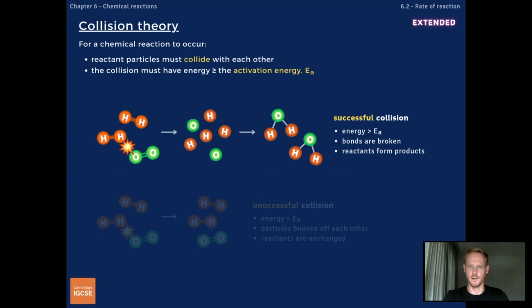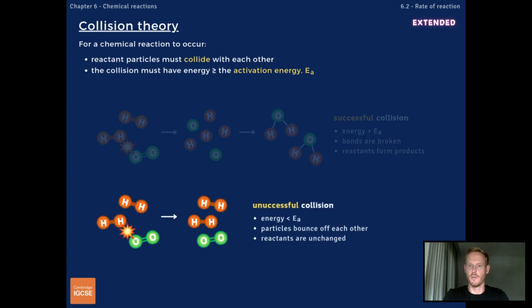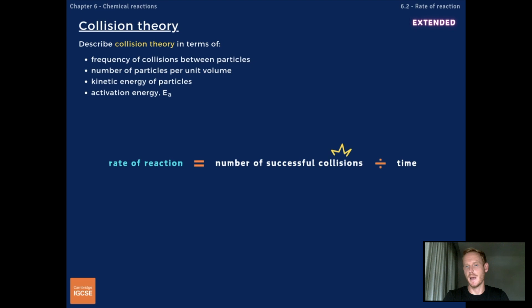Now there are two types of collisions. Successful collisions result in the formation of products, and unsuccessful collisions do not. If colliding particles have energy that is equal to or greater than the activation energy, then the collision is successful. If the energy of the particles is less than the activation energy, then the collision is unsuccessful and the particles remain unchanged. The rate of a chemical reaction depends on the frequency of successful collisions — that is, the number of successful collisions in a given unit of time.